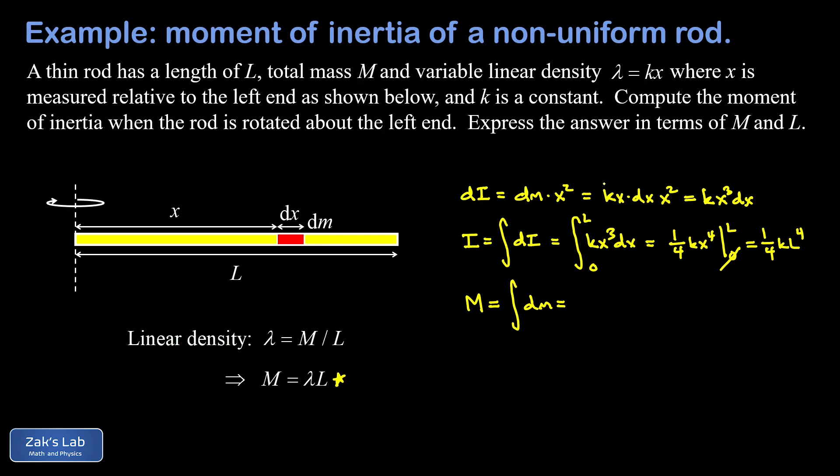And remember, those dm's can be written as kx dx. That's the linear density times the length. And we're adding up all of those mass contributions from the left end of the rod to the right.